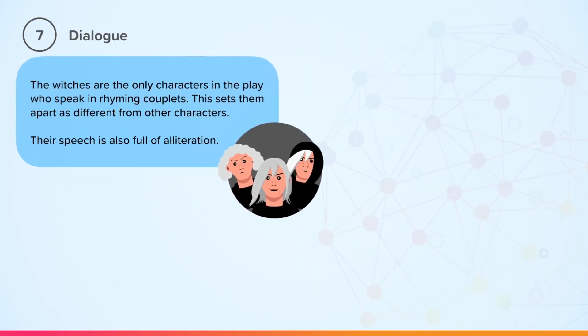The witches are the only characters in the play who speak in rhyming couplets. This sets them apart as different from the other characters. Their speech is also full of alliteration.